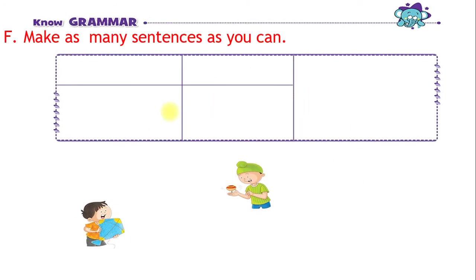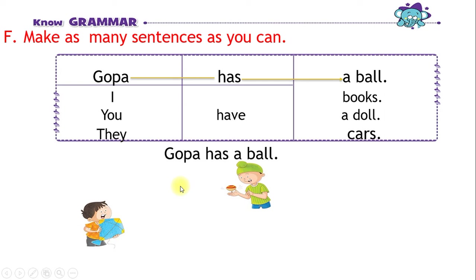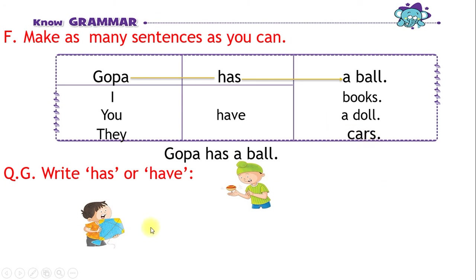Make as many sentences as you can. The words are given here. You have to make sentences. The first sentence is: Goppa has a ball. So make as many as you can.